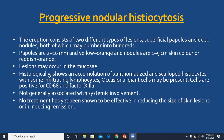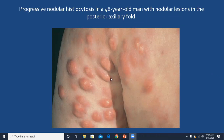Progressive nodular histiocytosis, as the name implies, is of progressive nature with nodular lesions. The eruption consists of two different types: superficial papules (2–10 mm, yellow-orange) and deep nodules (1–5 cm, skin-colored), which may number in the hundreds. Mucosa may be involved. Histology shows xanthomatized cells and scalloped histiocytes with lymphocytic infiltration. Immunohistochemistry is similar to all these conditions: CD68 positive, Factor XIIIa positive, S100 and CD1a negative.